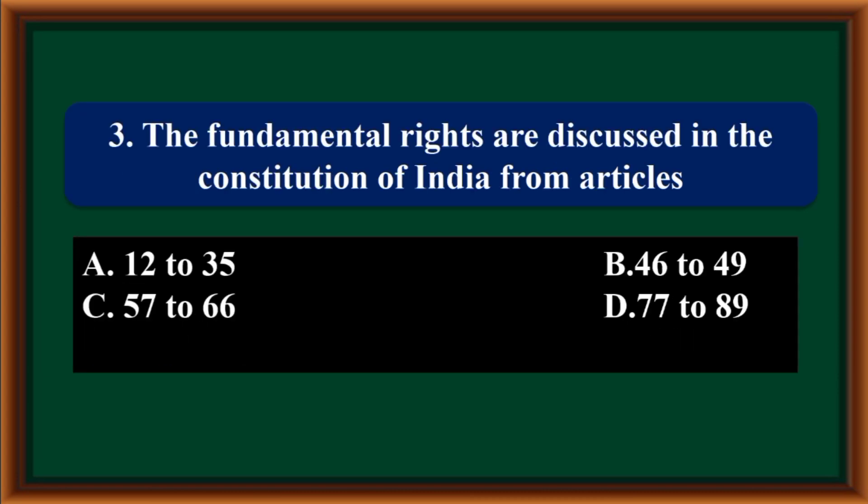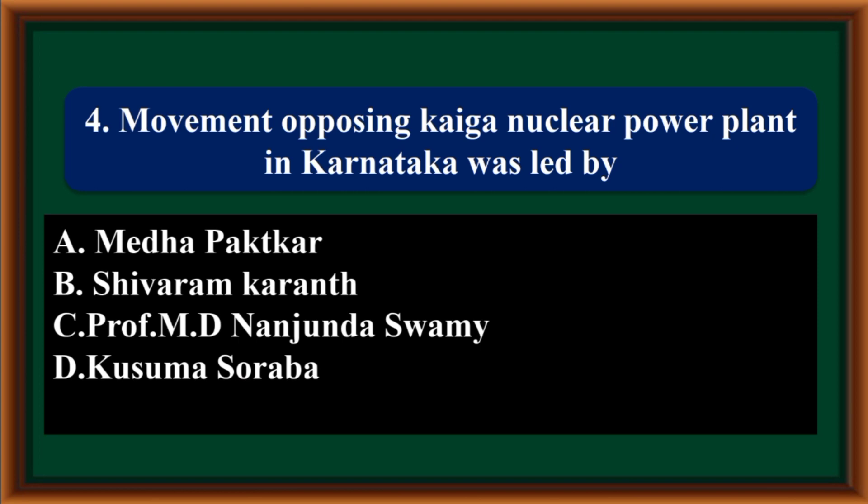The fundamental rights are discussed in the Constitution of India from Articles: 12 to 35, 46 to 49, 57 to 66, or 77 to 89. The correct answer is 12 to 35. The movement opposing the Kaiga nuclear power plant in Karnataka was led by: Medha Patkar, Shuram Karant, Professor M.D. Nanjundaswami, or Kusuma Swaraba.